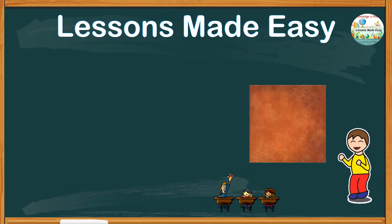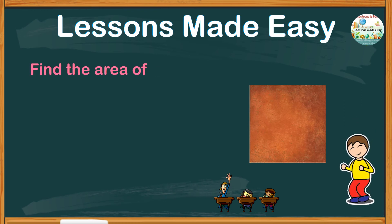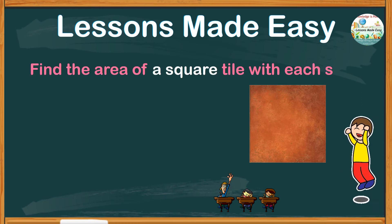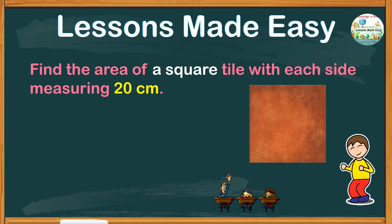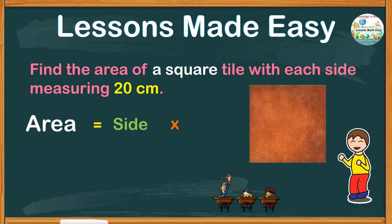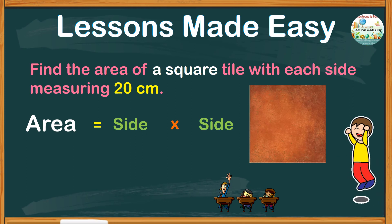Let's have one last problem. Find the area of a square tile with each side measuring 20 centimeters. This one goes with finding the area of a square. Area equals side times side. We all know that the sides of a square are equal. This shouldn't be a problem. Just substitute the values.